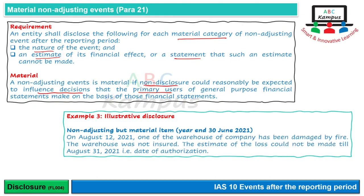Illustrative disclosure کی example: on August 12, 2021 — clearly year end کے بعد کا event — one of the warehouses of the company has been damaged by fire. یہ nature of event بتا دی۔ The warehouse was not insured. The estimate of the loss could not be made till August 31, 2021, which was the date of authorization۔ جب estimate available نہیں تھا تو بتا دیا کہ estimate possible نہیں ہے۔ ورنہ simply 'the estimate of the loss is [amount]' mention کر دیتے۔